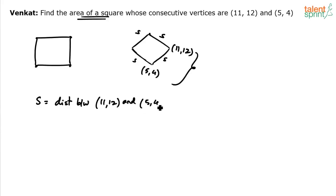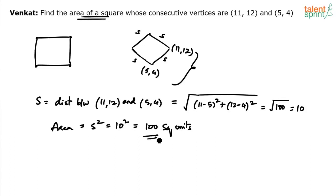The distance is √[(x1-x2)² + (y1-y2)²]. So (11-5)² + (12-4)² = 6² + 8² = 36 + 64 = 100. √100 equals 10, so the side is 10. What is the area of the square? Area of a square equals side squared, so 10² which should be 100 square units.